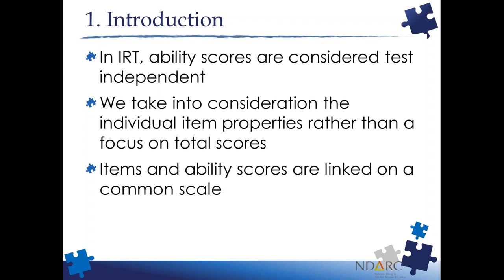The second point about IRT is that we take into consideration the individual item properties and how each item relates to the ability score, rather than just focusing on total sum scores. In IRT, we state that some items are indicative of more severe levels of the construct we're measuring, and there are less severe items - each item has unique properties we want to use. The key to IRT is linking items and ability scores together on a common scale, achieved by collecting data and using responses to plot each item where it provides the most information about a specific severity level.